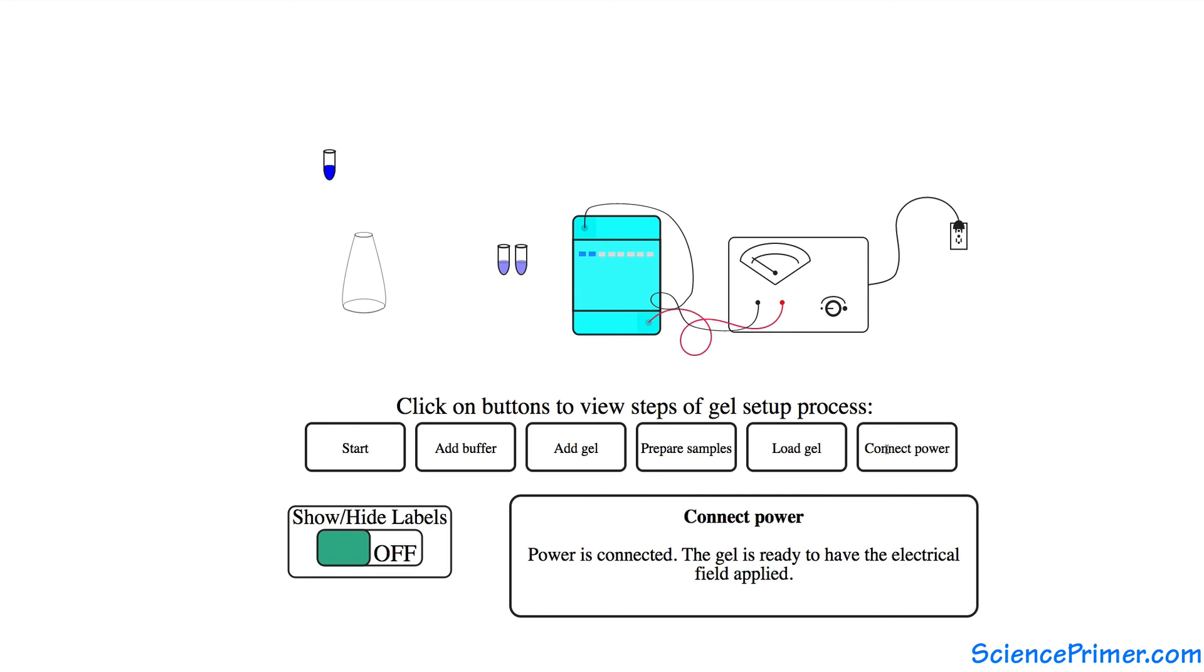The factors that influence migration include the ionic composition and pH of the running buffer, the temperature of the gel, the voltage applied to the gel, and the porosity of the gel matrix. By controlling for all of these factors, gel electrophoresis can be used to reliably separate DNA strands based on their length.